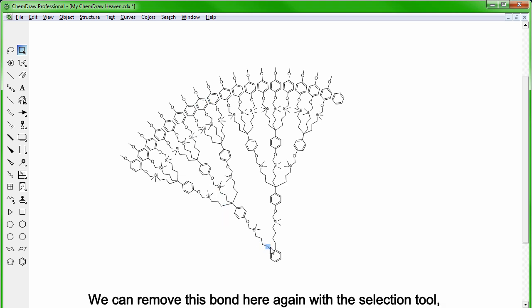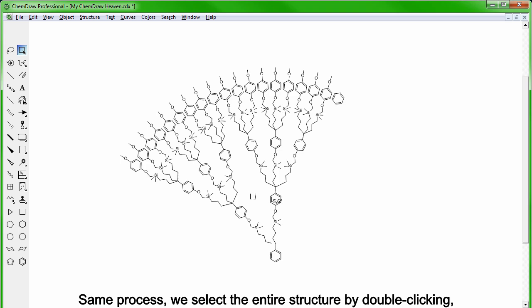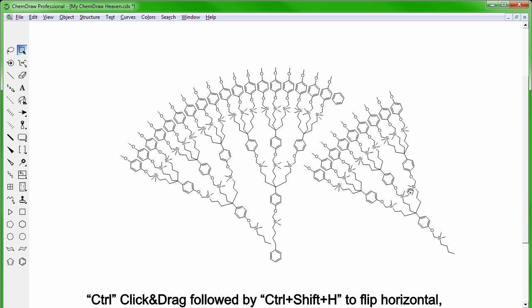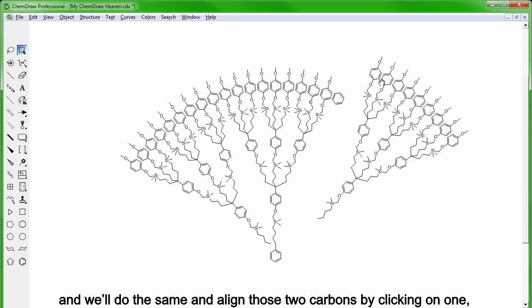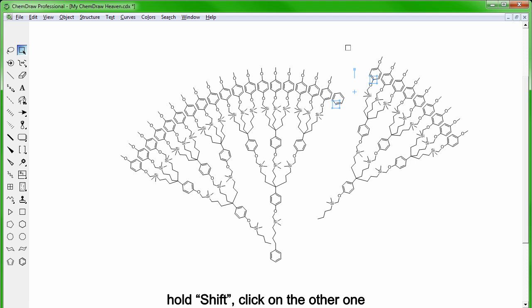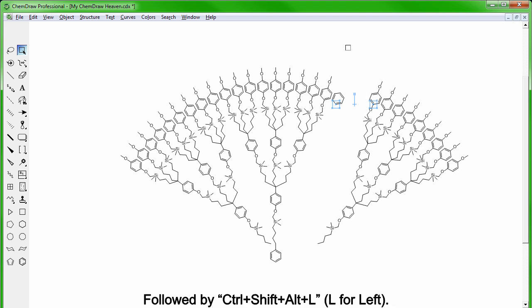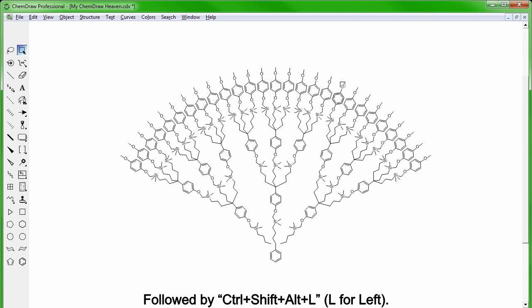We can remove this bond here again with the selection tool, isolate only that part of the molecule and rotate it so that it is pointing towards the benzylic carbon. Same process, we select the entire structure by double clicking, CTRL-click and drag followed by CTRL-SHIFT-H to flip horizontal and we'll do the same again, align those two carbons by clicking on one, hold SHIFT, click on the other one and then hit CTRL-SHIFT-ALT-B for bottom, followed by CTRL-SHIFT-ALT-L for left.